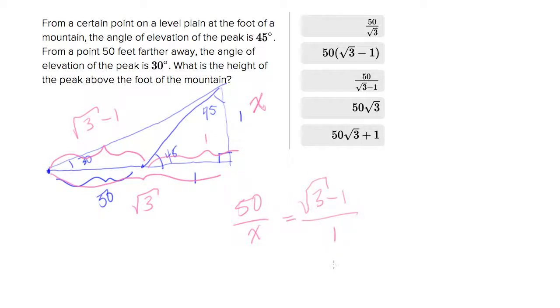If you solve this for x, you get 50 over root 3 minus 1, which is sort of a non-standard way of solving this because it has a radical denominator. But answer choice C does match that.